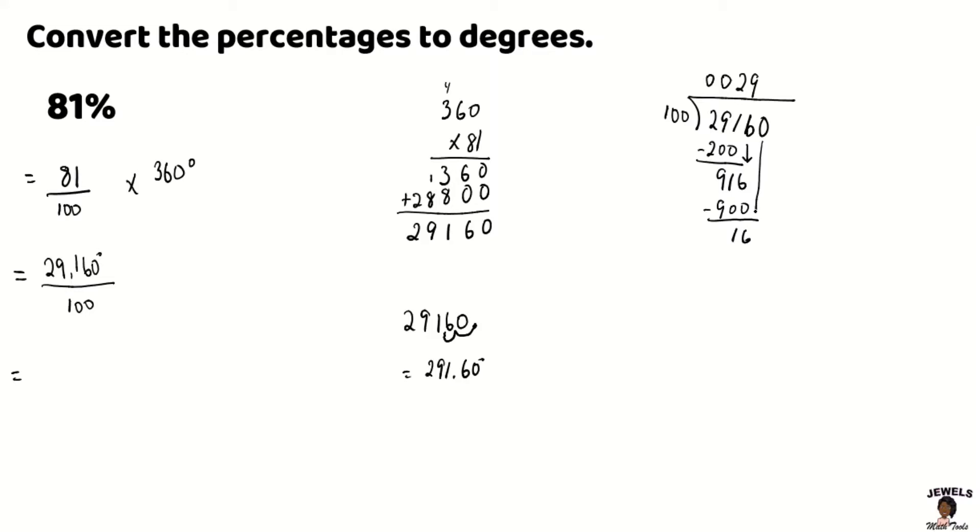Bring down our 0. And 100 goes into 160 once, 1 times 100 is 100. 160 subtract 100 gives us 60. We're going to input our decimal point at this point since we've done dividing with all of our whole number parts. Adding a 0. Bring down that 0. Changing our 60 into 600. 100 goes into 600, 6 times and 6 times 100 will equal to 600. 600 subtract 600 is 0.